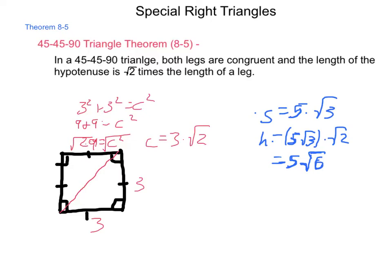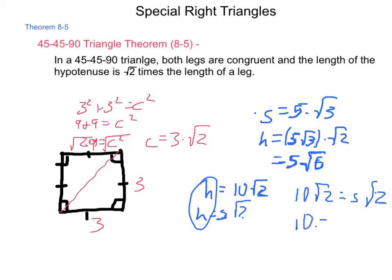Next, what if the hypotenuse is 10√2? To work backwards, I divide, because H = S × √2. Using substitution, 10√2 = S × √2. Using the division property of equality, I divide √2 from each side, giving me S = 10.